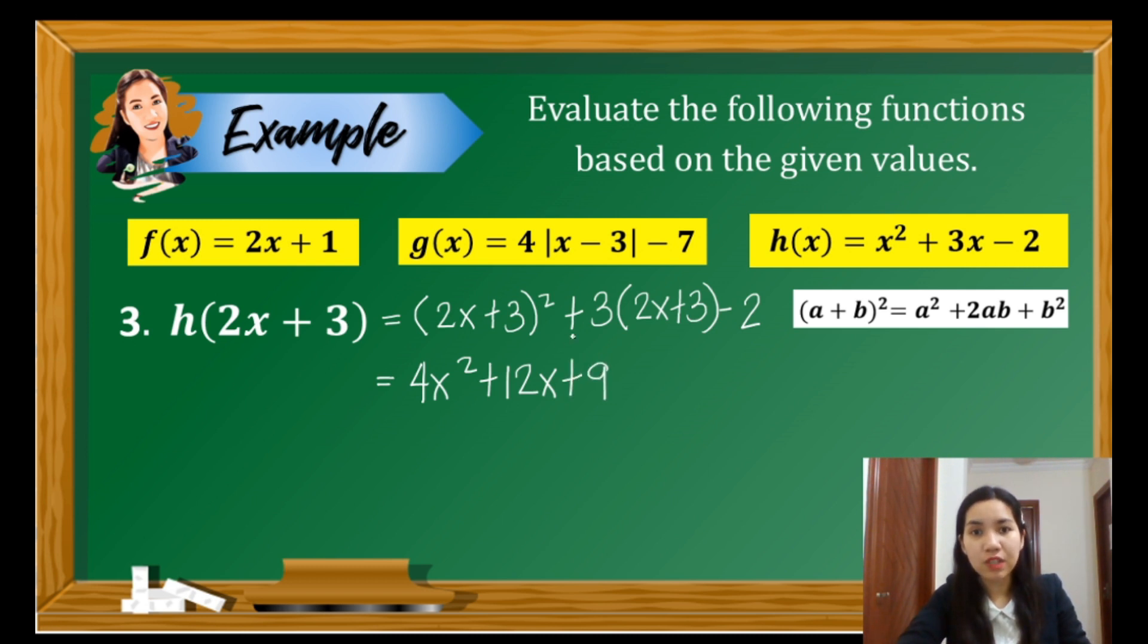Next, we have to distribute 3 to 2x plus 3. So we have 6x plus 9. Then just simply copy negative 2. Next is to combine like terms. So we have 4x² + 18x + 16. So the value of the function h when the input is an expression 2x + 3 gives us an expression 4x² + 18x + 16.